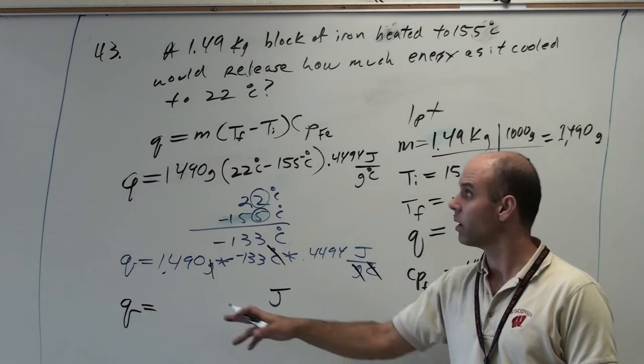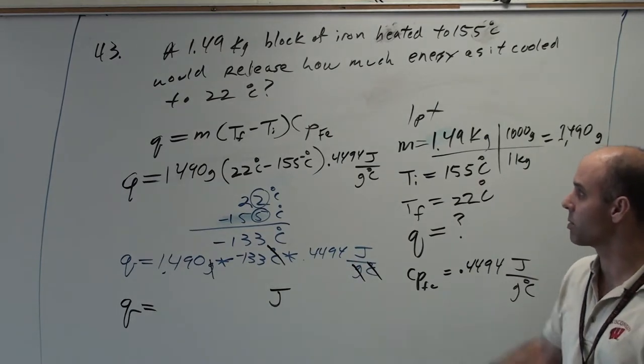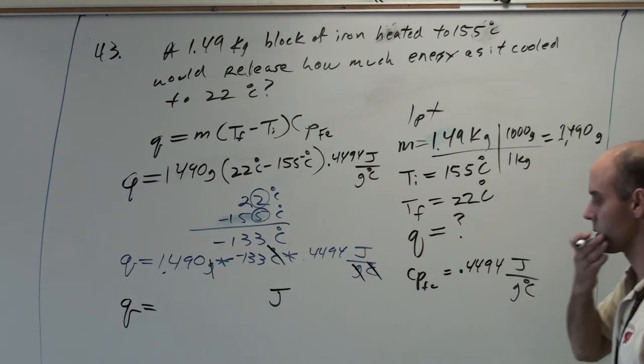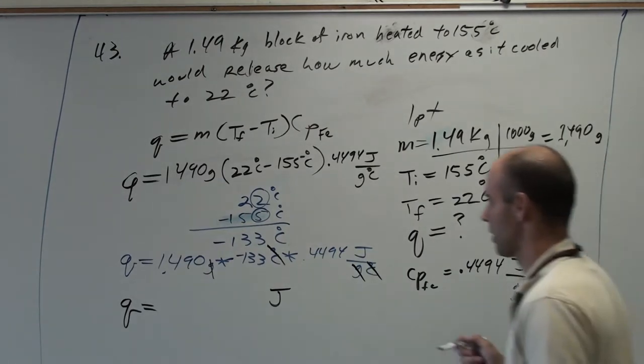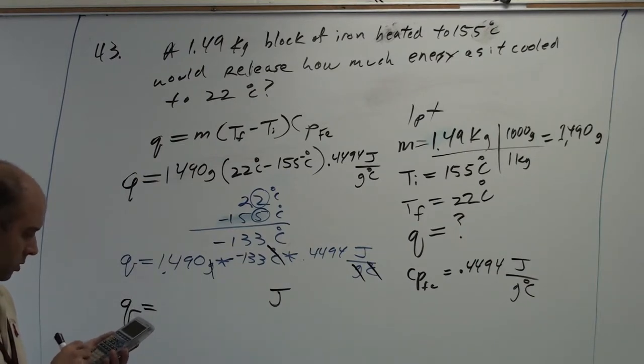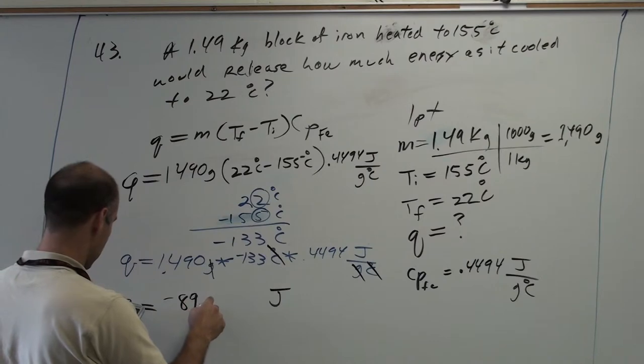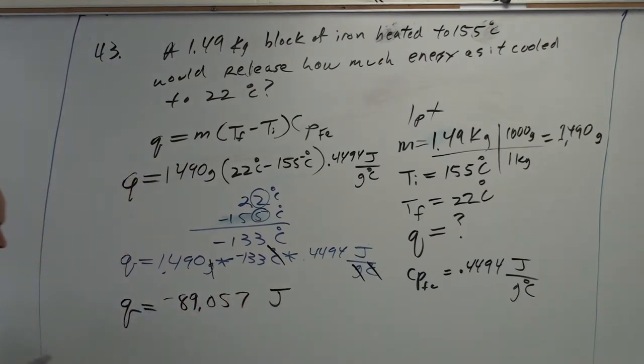If at the end of the problem, your mass is in Celsius, something's wrong. If at the end of the problem, your specific heat is in grams, you know something is wrong. So, now we can multiply. And we get negative 89,057. And then we apply sig figs.